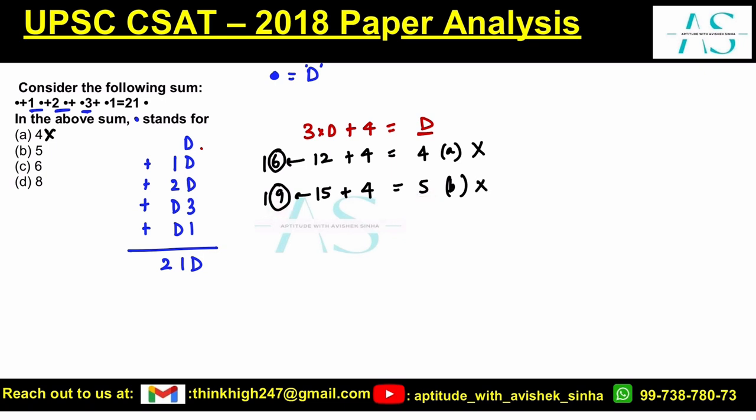Option C: 6, so this becomes 6, threes are 18, 18 plus 4 we get 22. Again the last digit is 2 but here it is 6, it does not match.